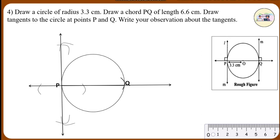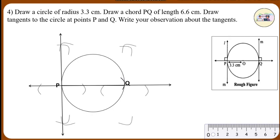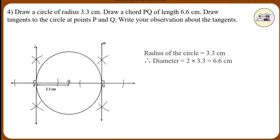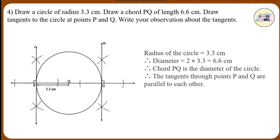Now repeat steps 4, 5, and 6 at point Q. Name this line M, which is the tangent at point Q. Observation: The radius of the circle is 3.3 cm, therefore the diameter equals 2 × 3.3 = 6.6 cm. Therefore, chord PQ is the diameter of the circle. Therefore, the tangents through points P and Q are parallel to each other, since the sum of interior angles is 180 degrees.